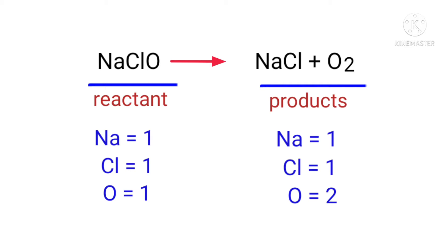In the reactant side there are one sodium atom, one chlorine atom, and one oxygen atom present. And the product side there are one sodium atom, one chlorine atom, and two oxygen atoms present. The number of atoms are not balanced on both sides.